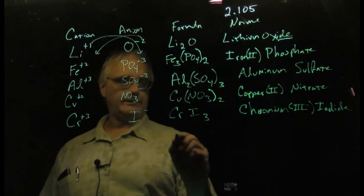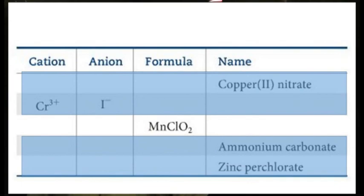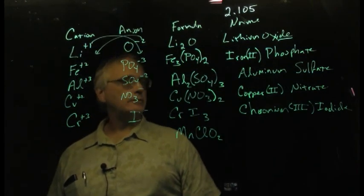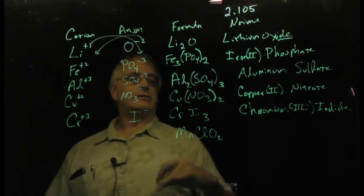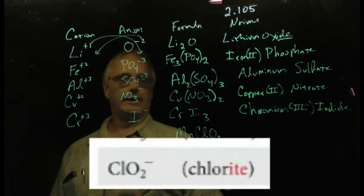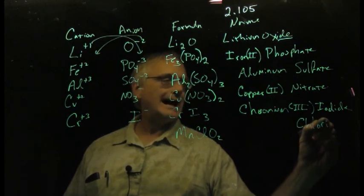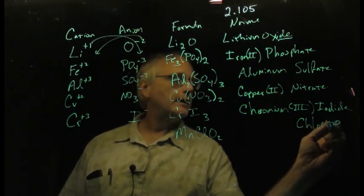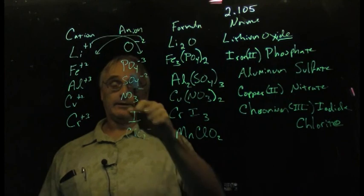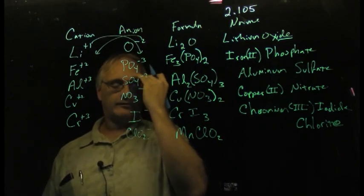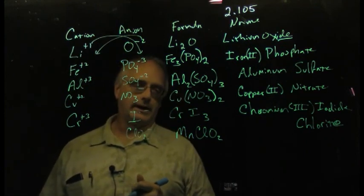This time we're given a formula, ClO2. Now this one, this ion is not one of the more common ones here, but the text does give its name and formula. This is the chlorite ion here. And so I'm going to go ahead and just identify that. It's chlorite, polyatomic ion ClO2 minus. Phosphate PO4 minus three, sulfate SO4 minus two, nitrate NO3 minus, chlorite ClO2 minus.